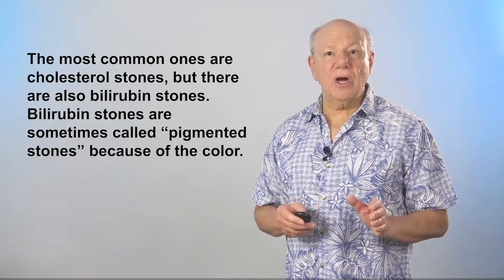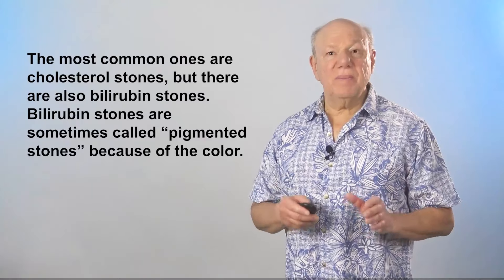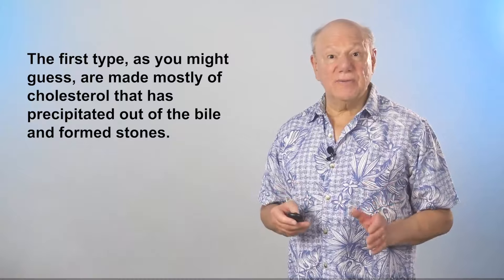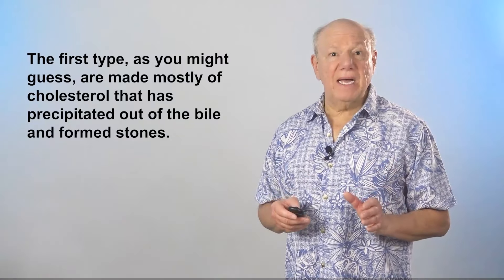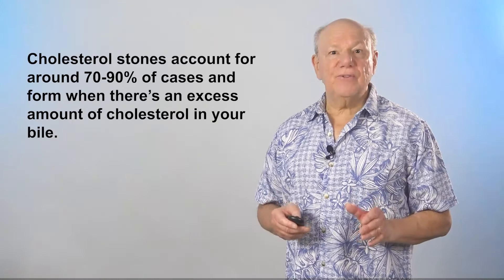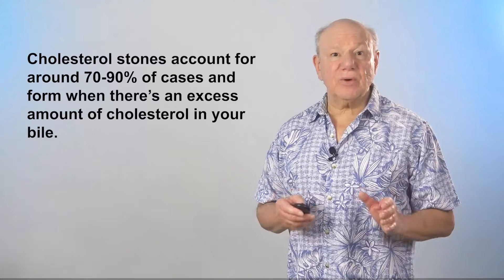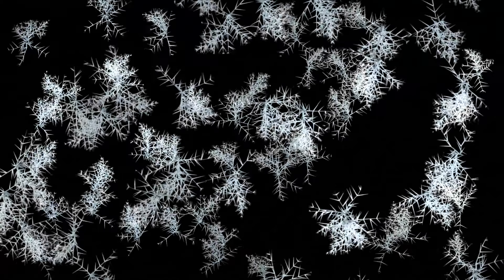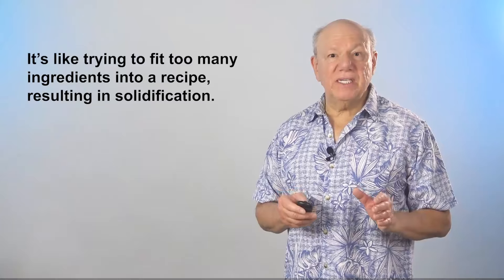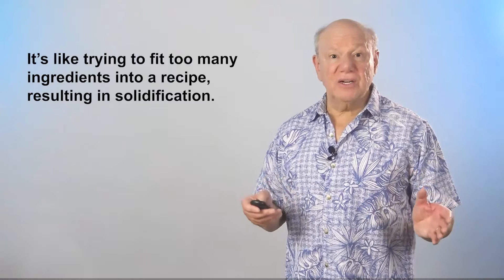Bilirubin stones are sometimes called pigmented stones because of their color. Cholesterol stones are made mostly of cholesterol that has precipitated out of the bile and formed stones. They account for around 70 to 90 percent of cases and form when there's an excess amount of cholesterol in your bile. This surplus can lead to bile becoming oversaturated with cholesterol, causing cholesterol to precipitate out of solution — it's like trying to fit too many ingredients into a recipe, resulting in solidification.